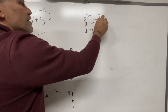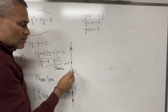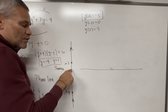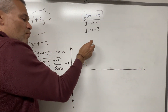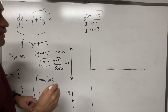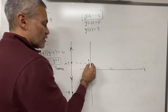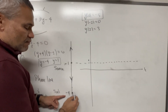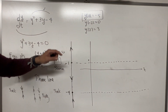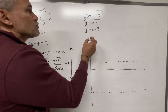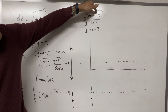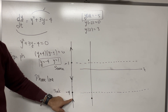Now to sketch the solutions, we draw a t-axis and a y-axis. We draw the equilibrium solutions as horizontal dashed lines: y = 1 and y = -4. These are the equilibrium solutions.